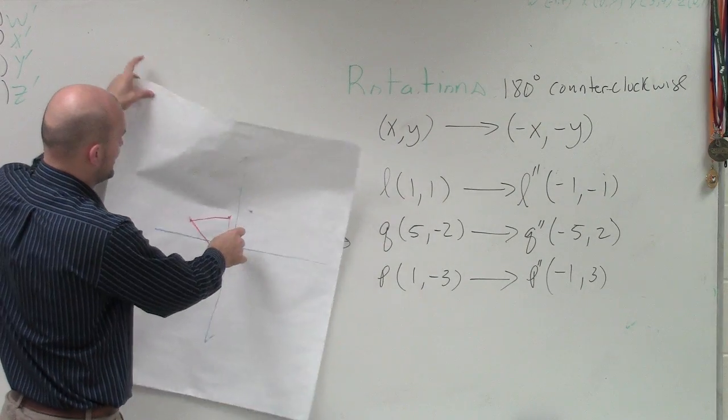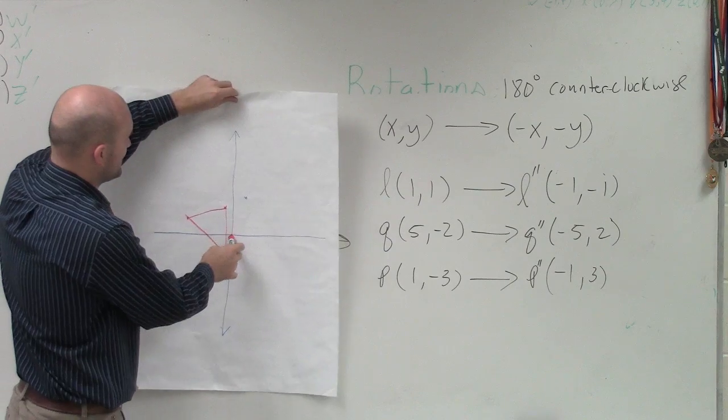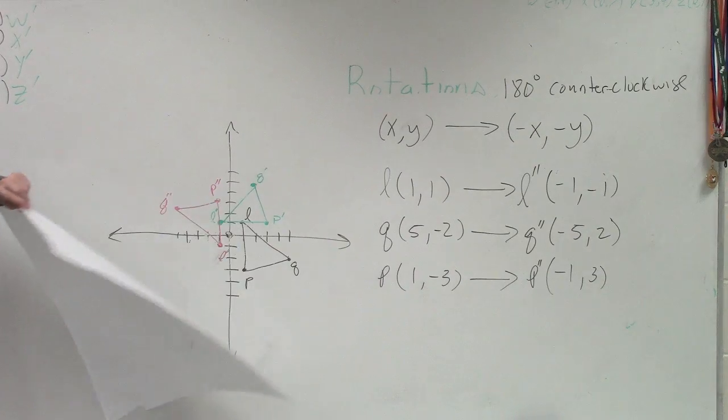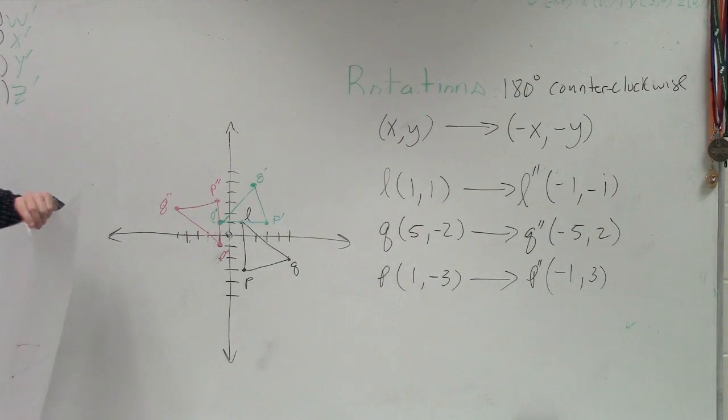If I rotate it another 90 degrees, we should have something that's going to look like this, right? So therefore I look at it, and is that roughly what our triangle looks like? Yes it is.